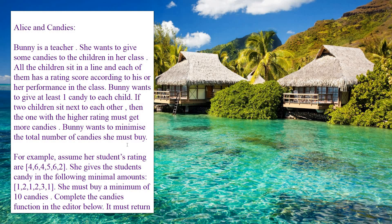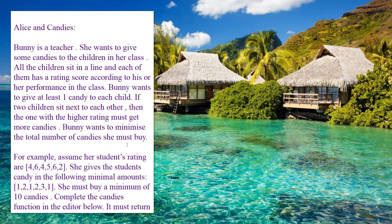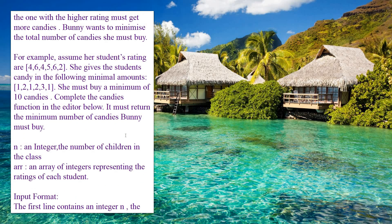Bunny wants to minimize the total number of candies she must buy. For example, assume the students' ratings are in an array: [4, 6, 4, 5, 6, 2]. The minimum candy she gives each child starts at one. The first student has rating 4 — she gives one candy. The second has rating 6, which is higher, so she gives two candies.